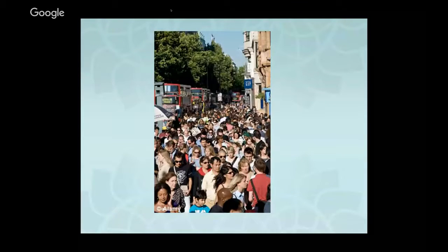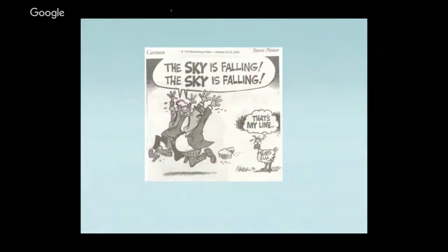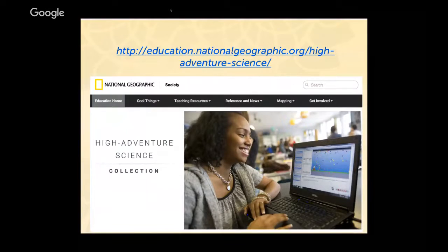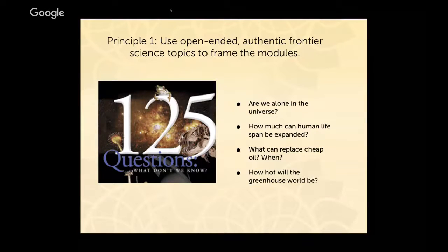When thinking about education, you have to make sure you're not doing all doom and gloom, and that you aren't oversimplifying or presenting biased materials — and that's where the High Adventure Science Collection comes from. The principles I'll be talking about for how we design the materials follow these five things: using open-ended, authentic frontier science topics to frame the modules; acquainting students with real-world scientific data; using model-based experimentation; engaging students in systems dynamics reasoning; and supporting evidence-based scientific argumentation.